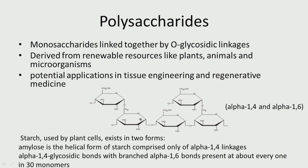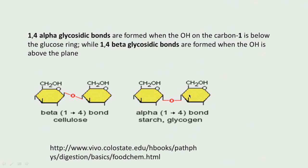In alpha linkage the oxygen is below the monosaccharides — like starch and glycogen. Whereas in beta linkage, the OH is above the plane — like cellulose and glucans, these are beta linkage. So the glycosidic bond is below the plane in alpha, whereas in beta the glycosidic bond is above the plane.